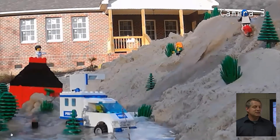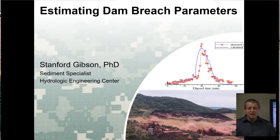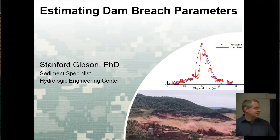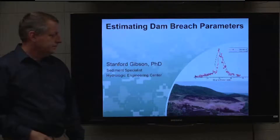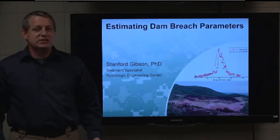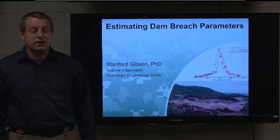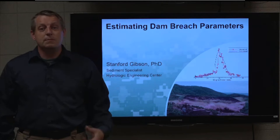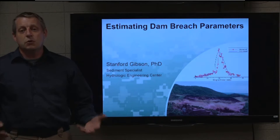One of the things it shows us is that even at this Lego scale, there are some iconic and canonical types of dam breaches. Dam breaches we think of as chaotic and very difficult to predict, but the processes that unfold are actually relatively predictable and relatively repeatable.